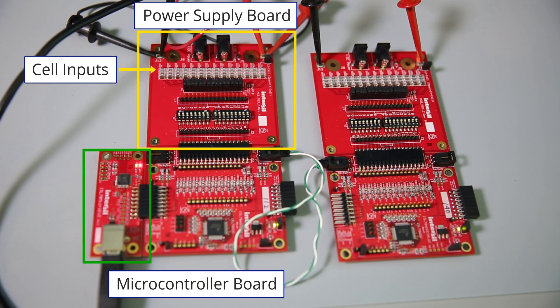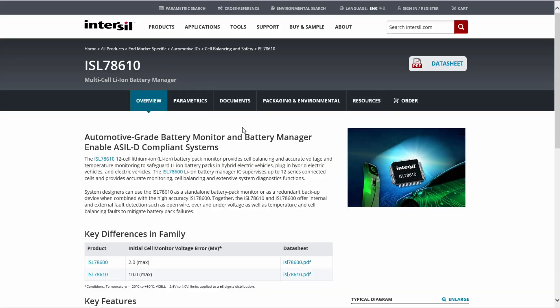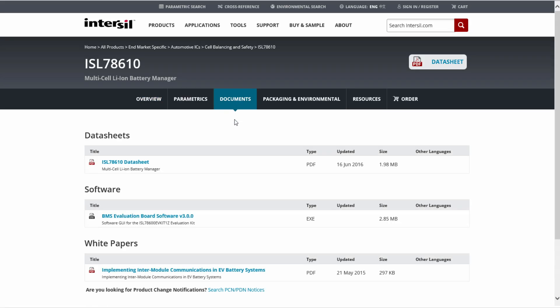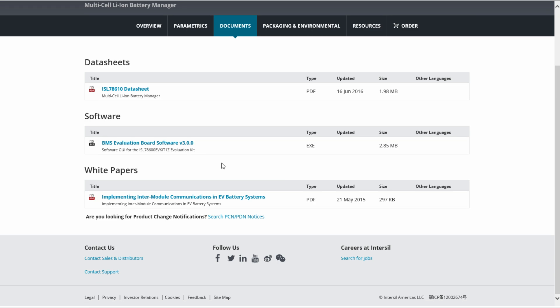The microcontroller board provides the interface to a PC. I pre-installed the GUI on my PC as a demonstration. The GUI along with a full suite of application notes, FAQs and data sheets can be downloaded from the ISL78610 product page on the Intersil website.